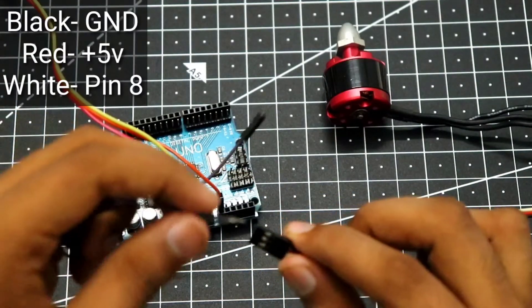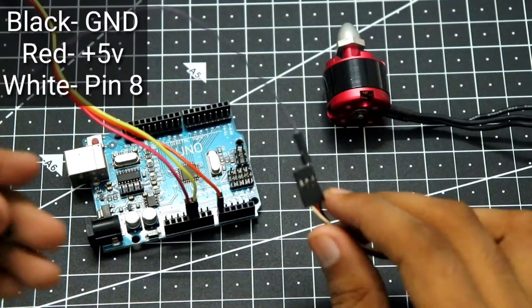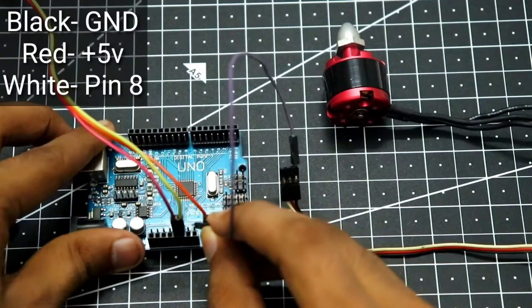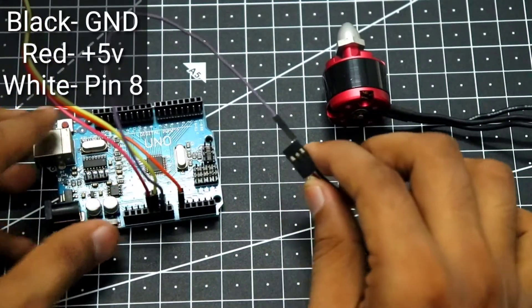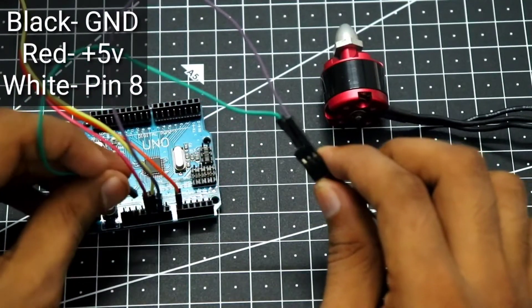I will take the ground wire, which is going to be the purple wire over here, and connect it to the ground of the Arduino. Then I'm going to connect the red wire to the positive input of the Arduino.